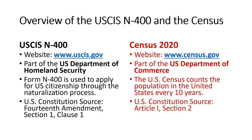The USCIS N-400 can be downloaded from USCIS.gov, which is part of the U.S. Department of Homeland Security. Form N-400 is used to apply for U.S. citizenship through the naturalization process, and its origin is in the Constitution — the 14th Amendment, Section 1, Clause 1, which defines how to be naturalized as an American citizen.